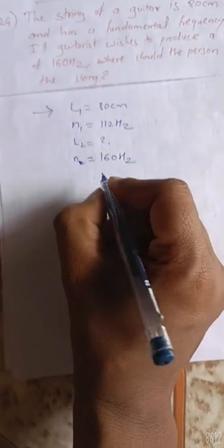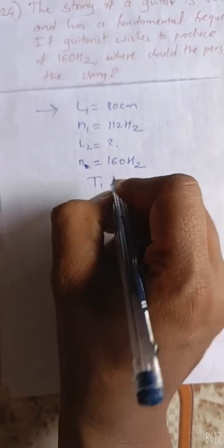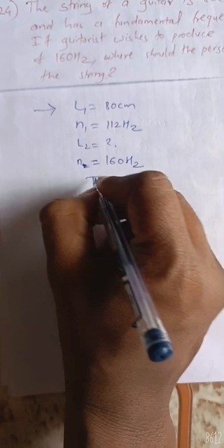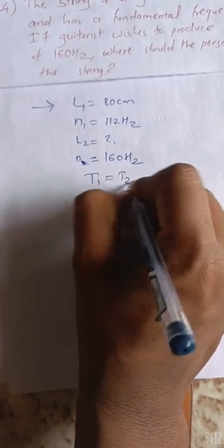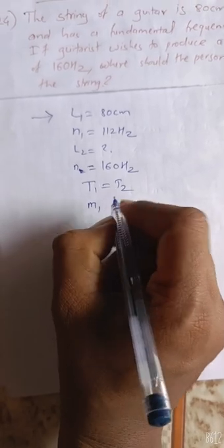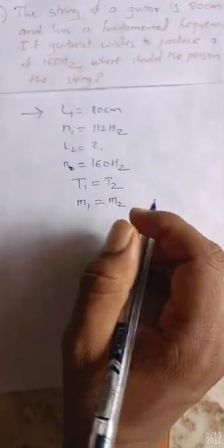This is the point: the cross section area is the same and tension is the same. So T1 is equal to T2. The mass per unit length is also the same, so m1 is equal to m2.